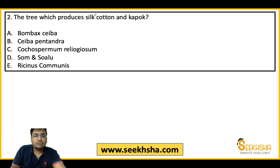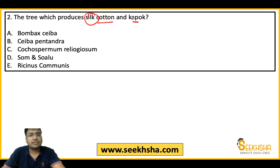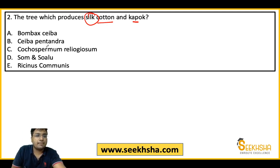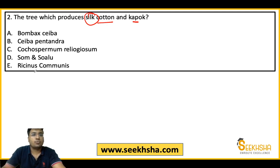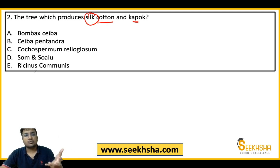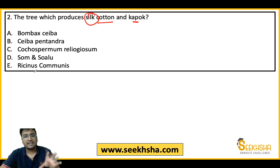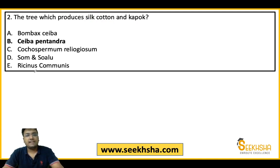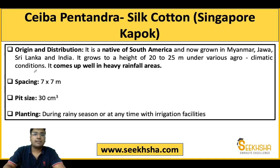Second question: which tree produces silk cotton and kapok? The botanical or scientific names are given as options. Option A: Bombax ceiba, Option B: Ceiba pentandra, Option C: Cocospermum religiosum, Option D: Samanea saman, Option E: Ricinus communis. There is no scope for guessing here — you must know the answer. Guessing will not give you the right answer; that is guaranteed.